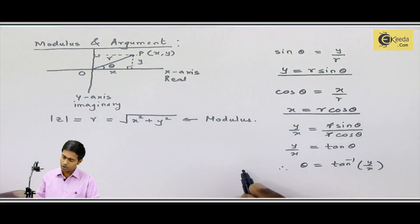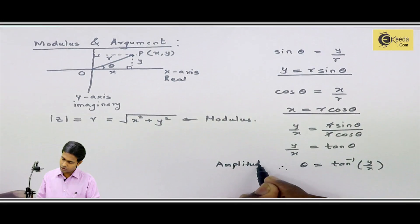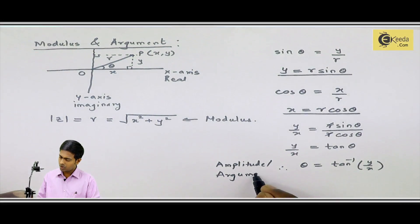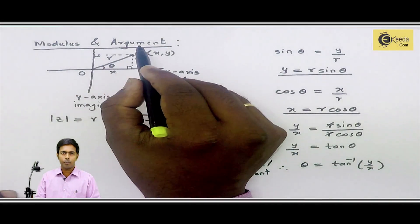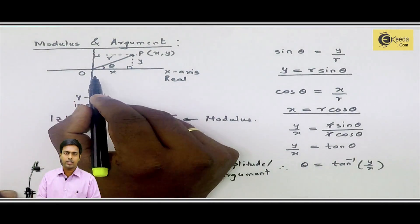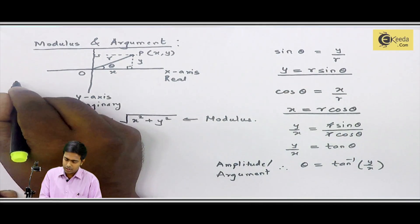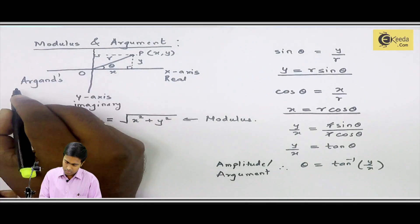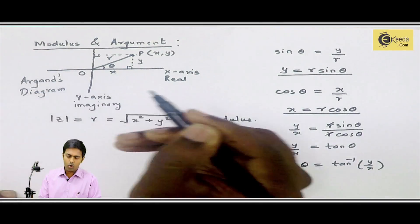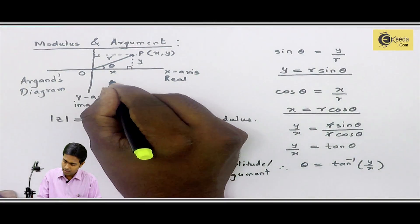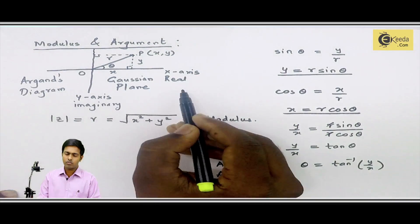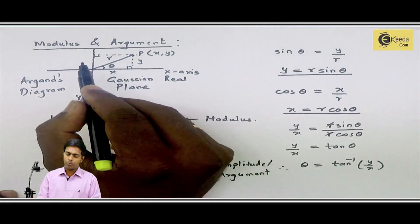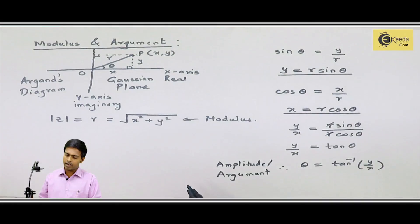This is the formula for amplitude, also called the argument of a complex number, and it is denoted by theta. We have seen how to find modulus and argument using geometric representation. This diagram is also called the Argand diagram, or it is also called the Gaussian plane. Using the Gaussian plane or Argand diagram, we have seen how to find amplitude and modulus. Similarly, we can see how the complex number will be represented in polar form.